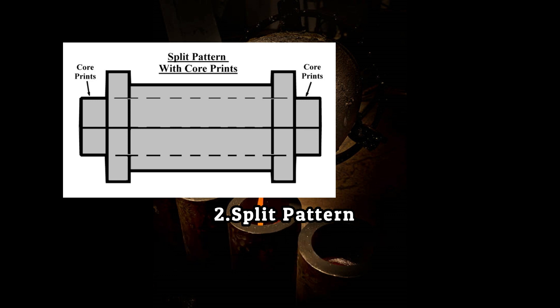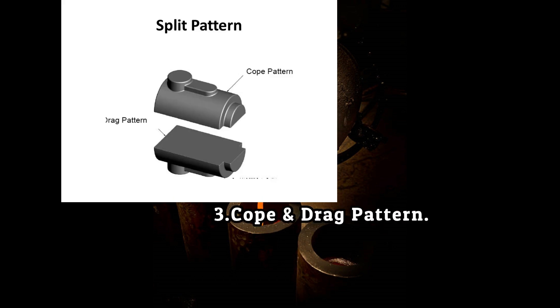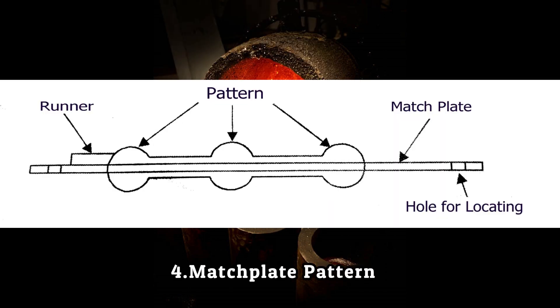When the pattern is made in more than three parts, cheeks are also used for easy removal. Third is cope and drag pattern, which are two-piece split patterns as discussed above, used for large objects. Fourth is match plate pattern, a split pattern in which cope and drag sections are mounted on opposite sides of a plate known as the match plate.